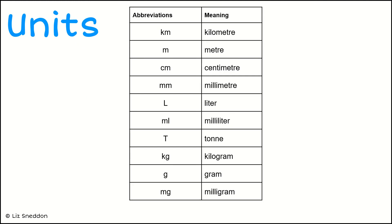So when we've got some different units here, you can see there's a whole pile of different things. We can talk about the length of things: kilometers, meters, centimeters, millimeters. We can talk about how much capacity there is: liters, milliliters, tons, kilograms, grams, milligrams, and many more.